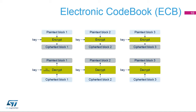ECB is the simplest form of operation. There are no chaining operations and no special initialization stage. The message is divided into blocks and each block is encrypted or decrypted separately. For an ECB decryption, a key for the first round of decryption must be derived from the key of the last round of encryption. This is why a complete key schedule of encryption is required before performing the decryption.